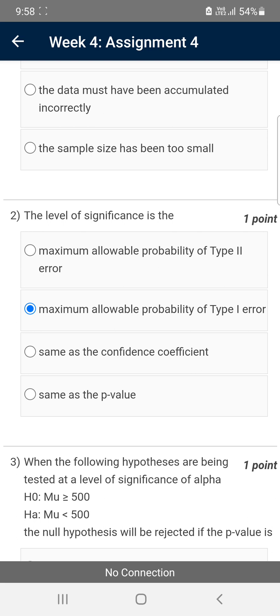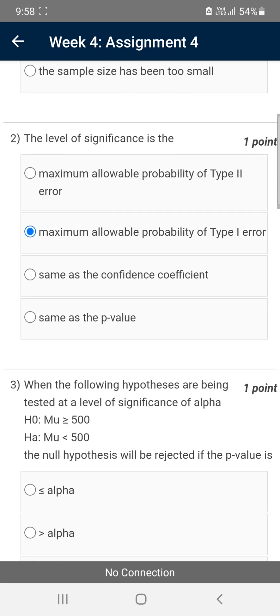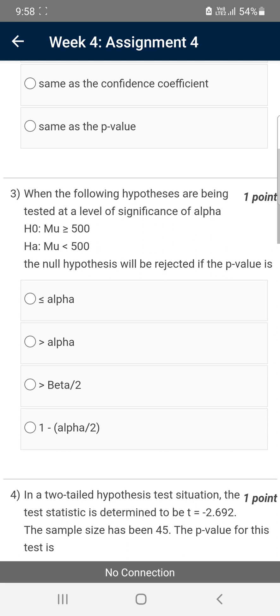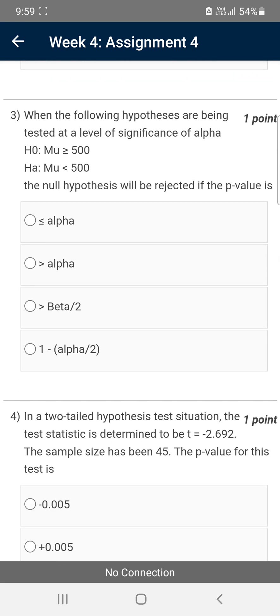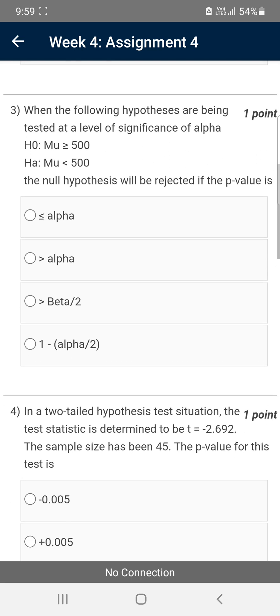Moving on to the third question. When the following hypotheses are being tested at a level of significance of alpha, H0: mu greater than or equal to 500, H1: mu less than 500, the null hypothesis will be rejected if the p-value is less than or equal to alpha. That is the first option.